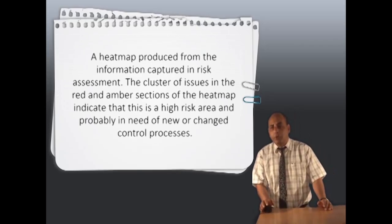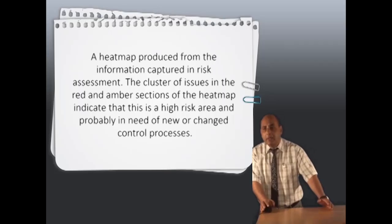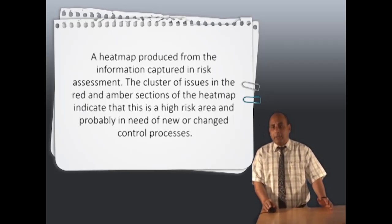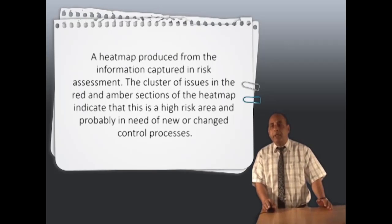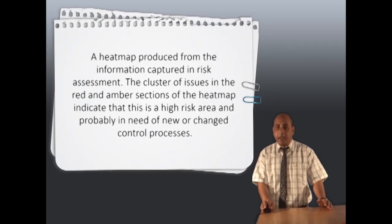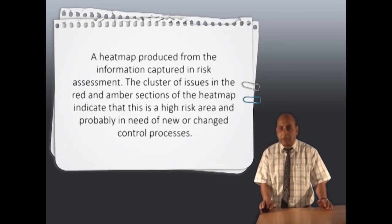This heatmap is produced from the information captured in the risk assessment. The cluster of issues in the red and amber sections of the heatmap indicate that this is a high risk area and probably in need of new or changed control processes.